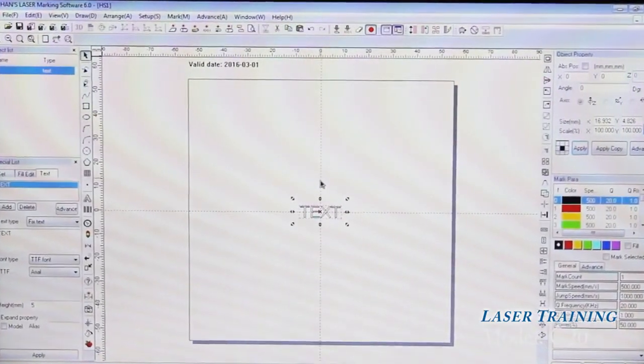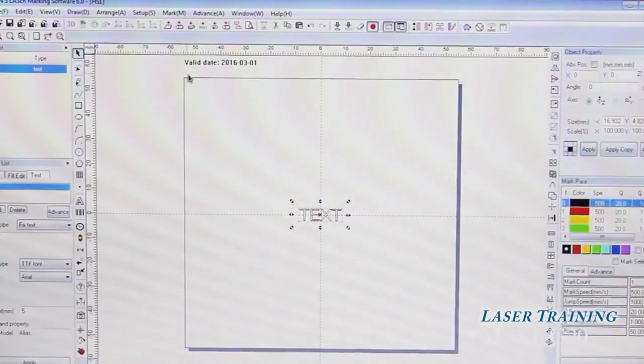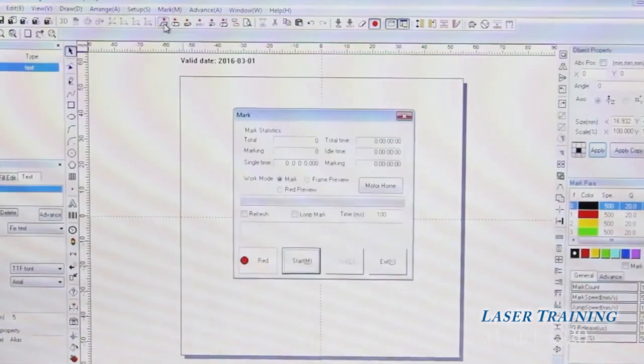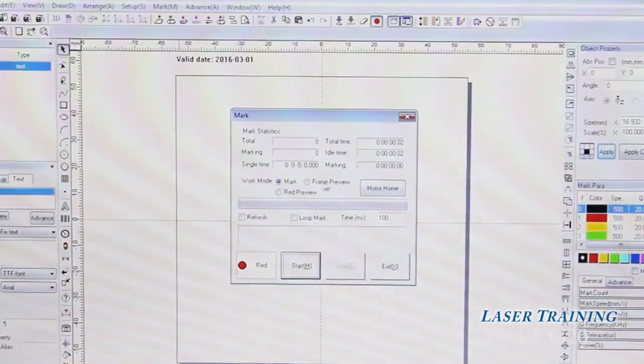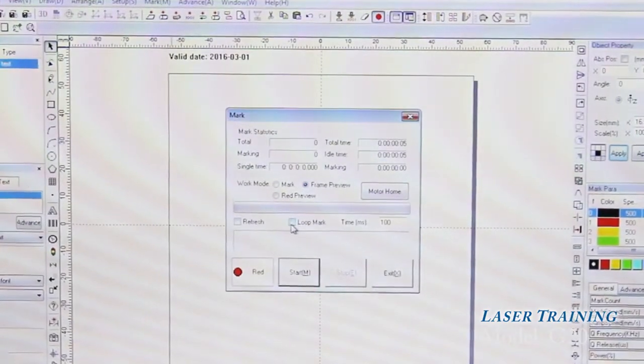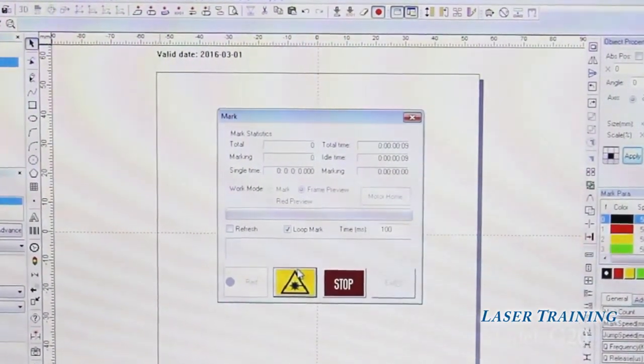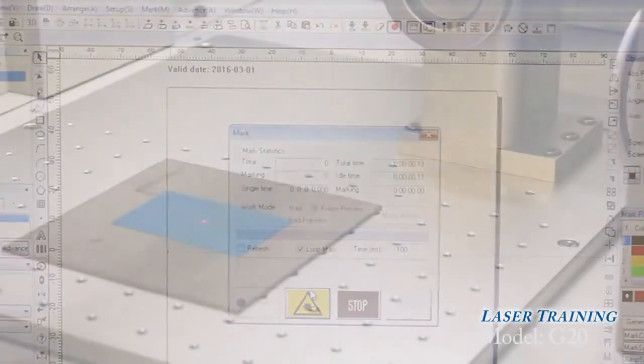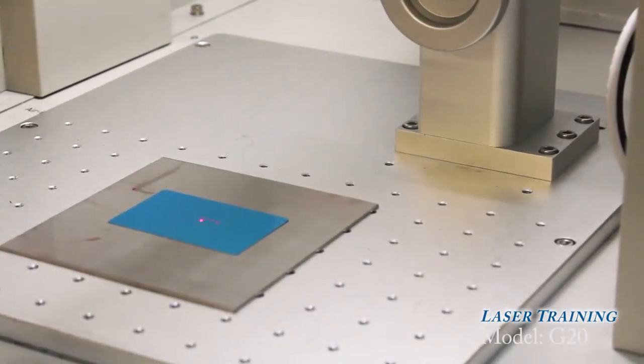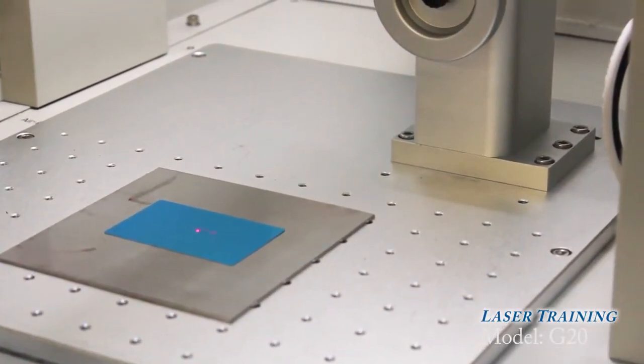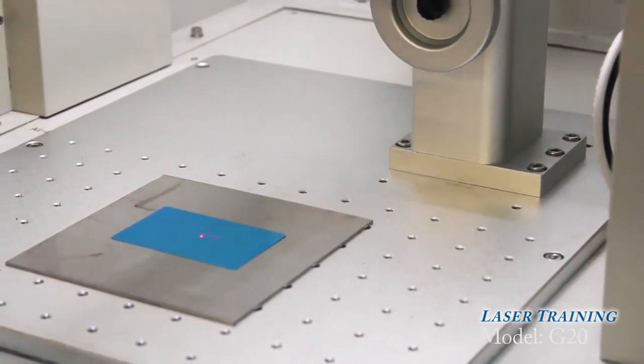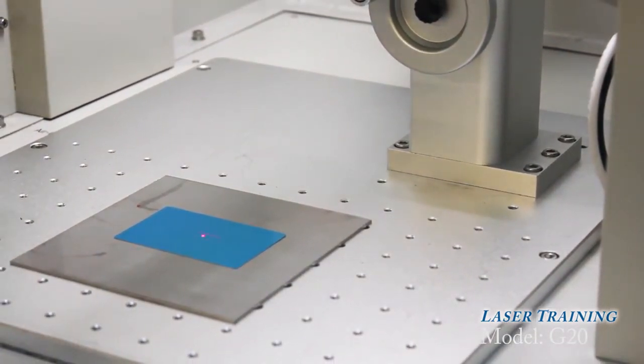To preview the marking area once you've found the focus, go to this icon here. You hit the frame preview, and as you can see, it'll show where it'll be marked. For instructional purposes, the marking will be done with the door open, but remember, when you use the machine, the door has to be closed.